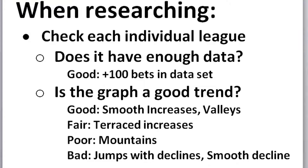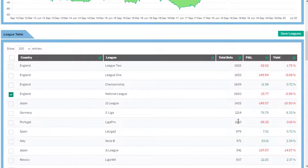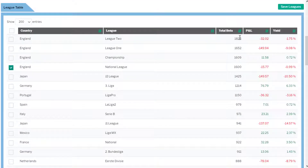When updating and researching these strategies, I've been checking each individual league — does it have enough data? For example, having more than 100 bets in a data set for one league is a good sign that you have enough data to make a decision. If you only have 10 bets in a league, that's not enough data to say whether it's a good league or not.